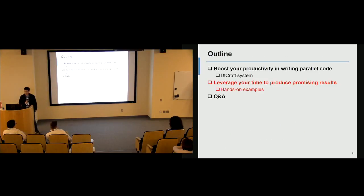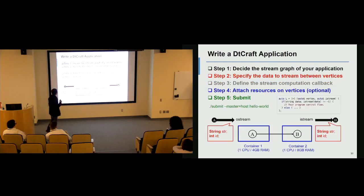Now I'm going to show you how to use DTCraft to write a simple application by giving you an example. In order to write a DTCraft application, these are the five steps you need. First, you need to decide the stream graph of your application—that's the main idea of this project. Once you decide the stream graph, then you have to specify the data type you want to communicate between different machines or different vertices. Then you define a computation callback, telling the system what you want to do once data arrives. Then you can attach resources to the vertices, specifying internal memory, CPU, or GPU. Then you can use our submission script to submit your program to the cluster.